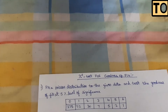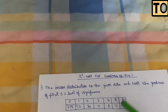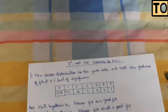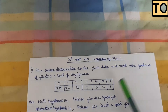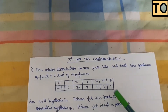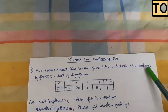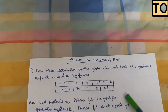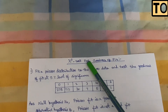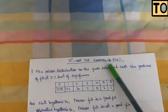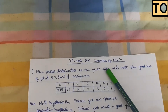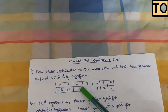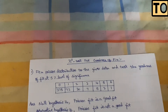The first step is to write the null hypothesis and the alternate hypothesis. Null hypothesis: the Poisson fit is a good fit. Alternative hypothesis: it is not a good fit. These two statements — null hypothesis and alternate hypothesis — are the same structure for all Chi-Square goodness of fit problems.